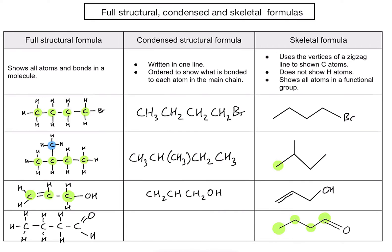For the condensed structural formula with four carbons: CH3, then CH2, then CH2, then CHO. Note that I write CHO rather than COH here — we normally write OH for a hydroxyl functional group, but for the carbonyl functional group in an aldehyde, I put the H before the O to give extra clarity.